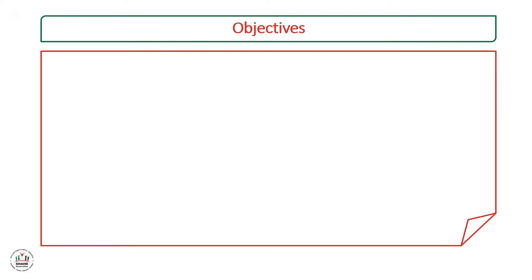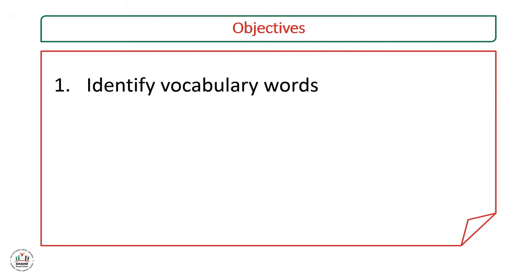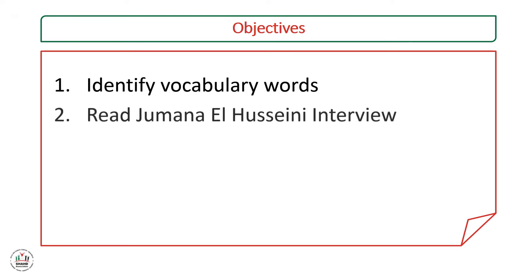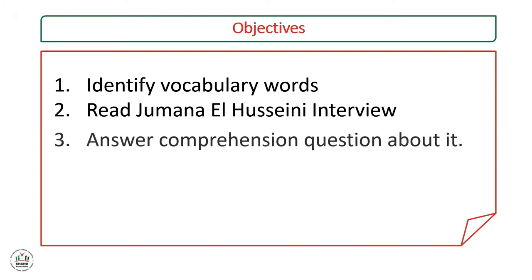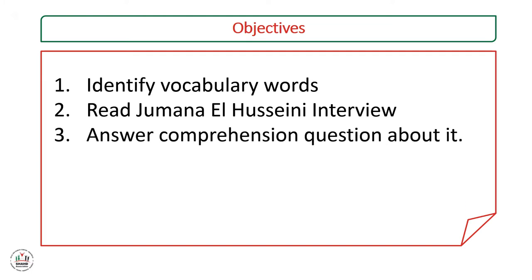In this session we have three objectives: we will identify vocabulary words, we will read about Jumana Al-Husayni in the review, and finally we will answer comprehension questions about it.